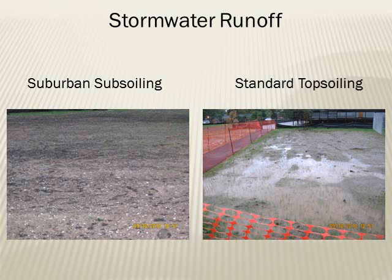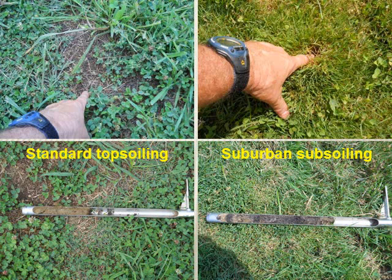Once turf was established, it told a clear story as well. Here's how these fields look two years after treatment. Notice how the turf cover for the standard topsoiling is pretty spotty and dominated by clover and crabgrass. The soil profile here shows a very thin organic layer underlain by compacted, structureless sandy loam. In contrast, our suburban subsoiling resulted in very dense, thick, vigorous turf cover that could outcompete the clover, and a more structured soil profile with a much greater depth of organic matter.